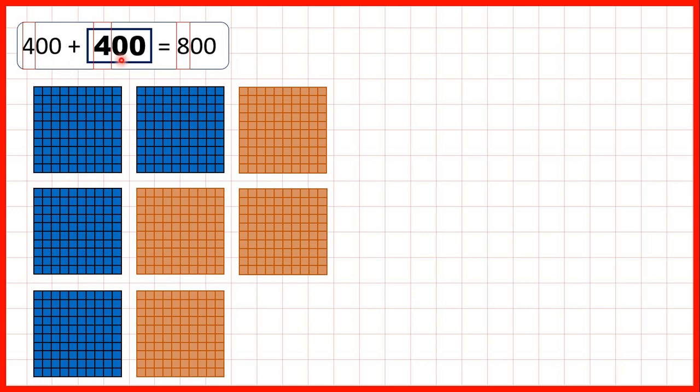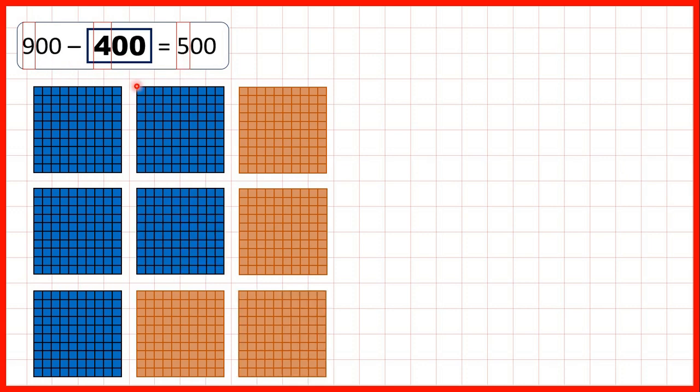400 plus 400 is 800. 900 minus 400 is 500, because if we start with all 9 of our hundreds blocks and take away the 4 that are in red, we're left with 5 hundreds blocks in blue, so that's 500.